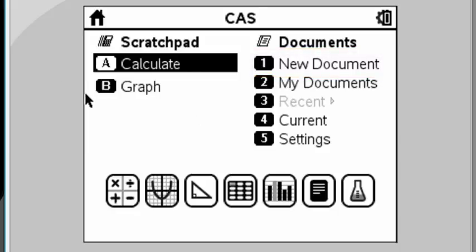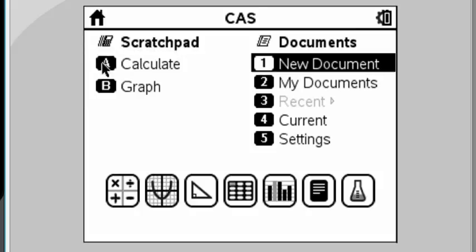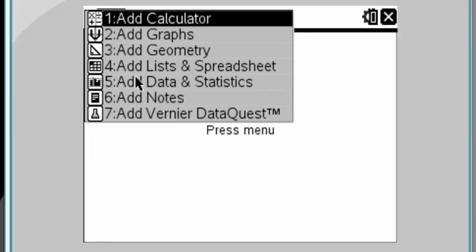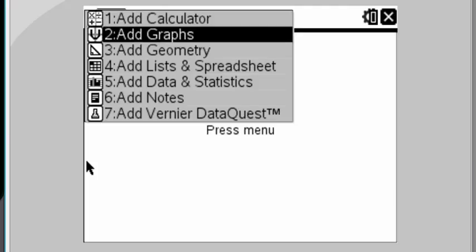So use the click pad or press number 1 to choose new document. Now, it'll be asking you for what to create and we're going to choose add graphs. So you can press number 2 or use the keypad.